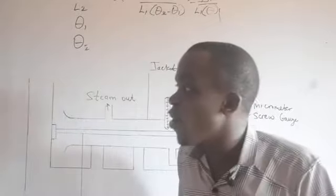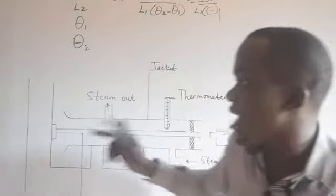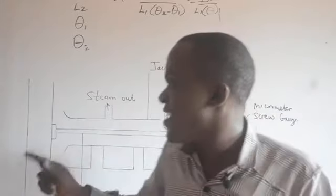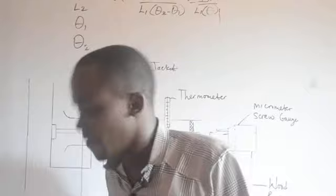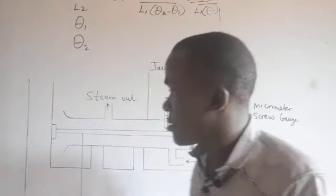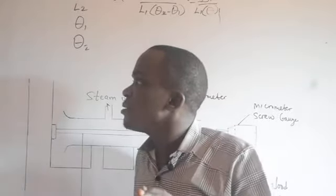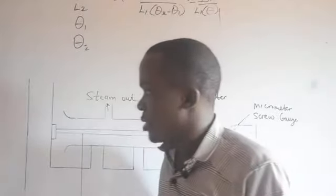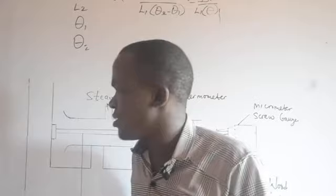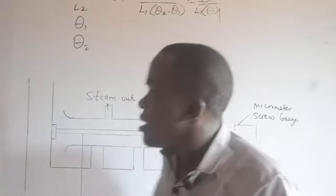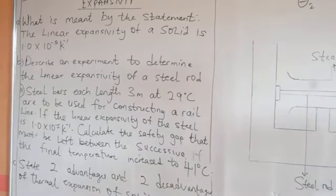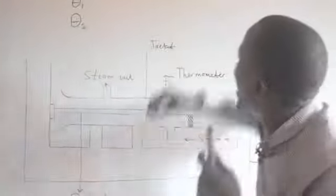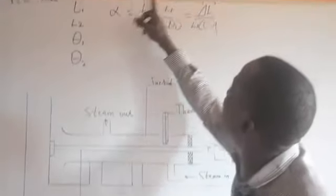Most past questions include a calculation aspect. The question says: steel bars each of length 3 meters at 29 degrees Celsius are to be used for constructing a rail line. If the linear expansivity of the steel is 1.0 times 10 to the minus 5 per Kelvin, calculate the safety gap. One of the major problems is understanding the English expression — someone may ask what 'safety gap' means. They could have said 'increase in length' or 'final length,' but using 'safety gap' is a way to test if we understand what is being asked.